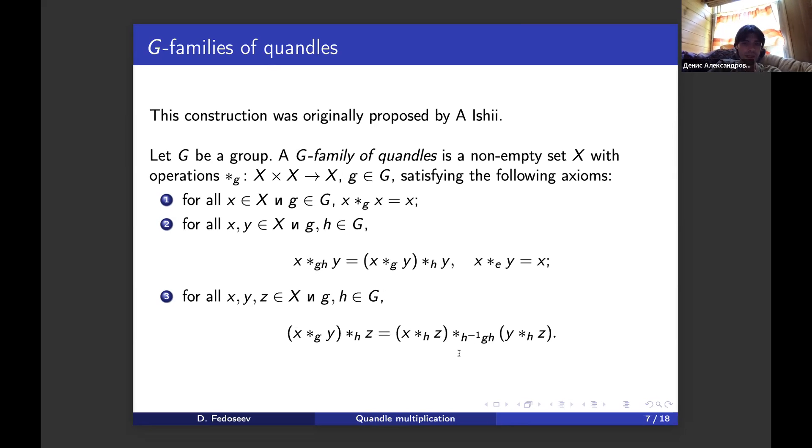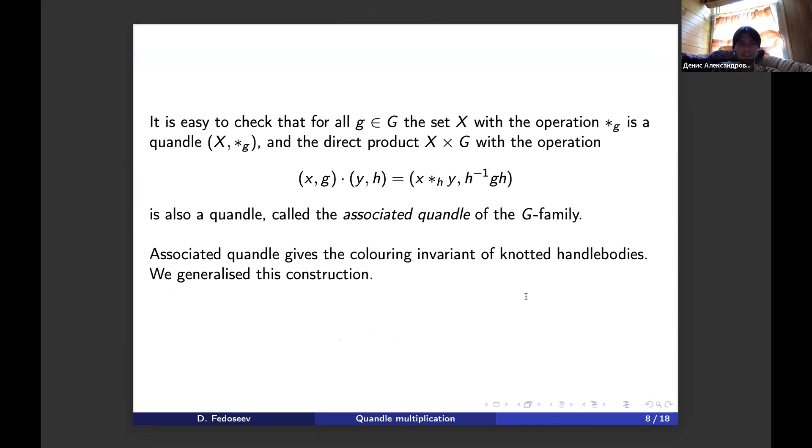Finally, we have an axiom resembling distributivity but with a twist, called twisted distributivity. In the middle we have not g as we would expect for distributivity, but g conjugate by h. It is easy to check that for g in the group, this operation is actually a quandel operation. We take the direct product X by G and define the operation as written, and we also have a quandel called the associated quandel of the G-family. Exactly this associated quandel gives us a coloring invariant of a knotted handlebody.